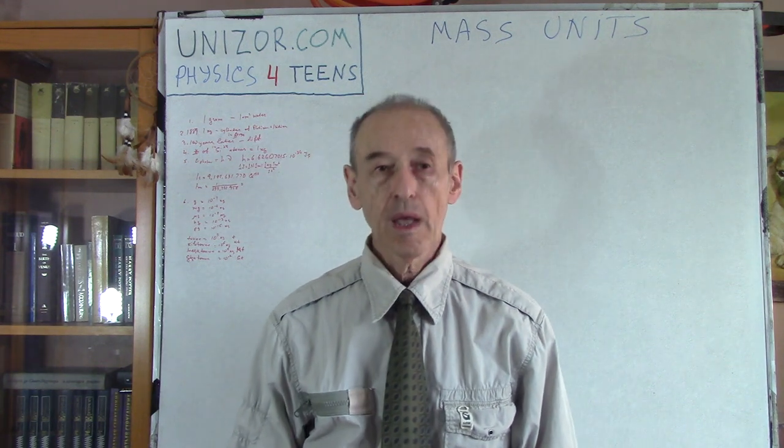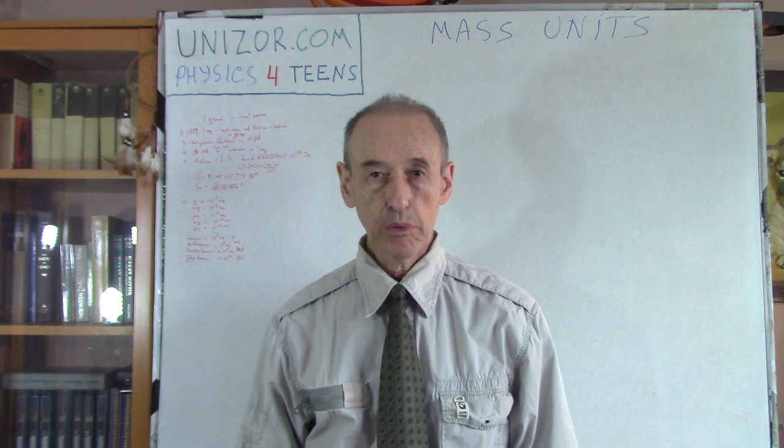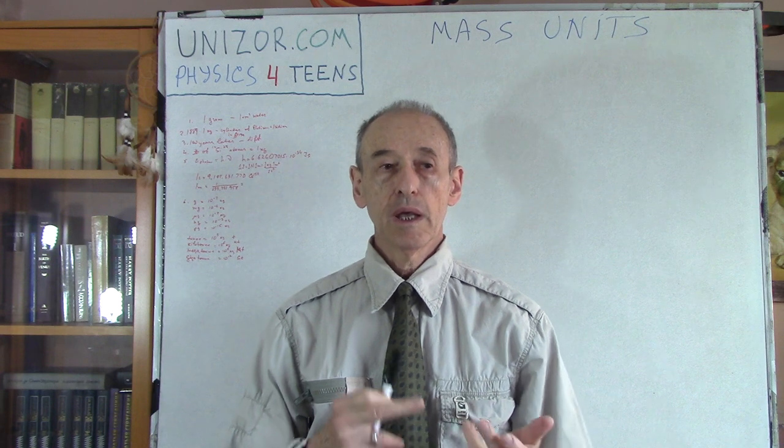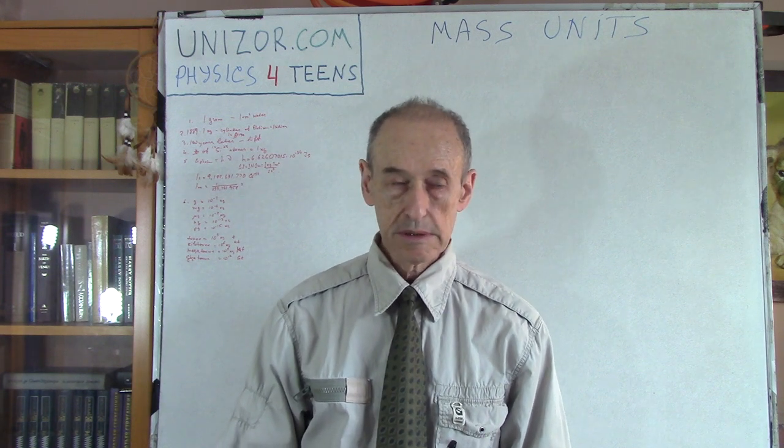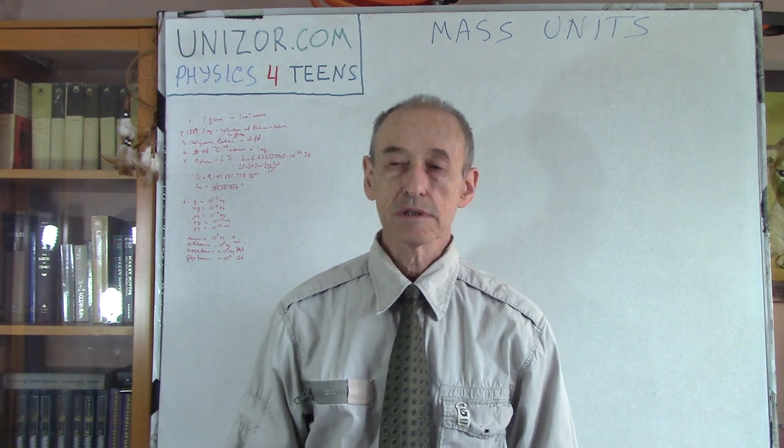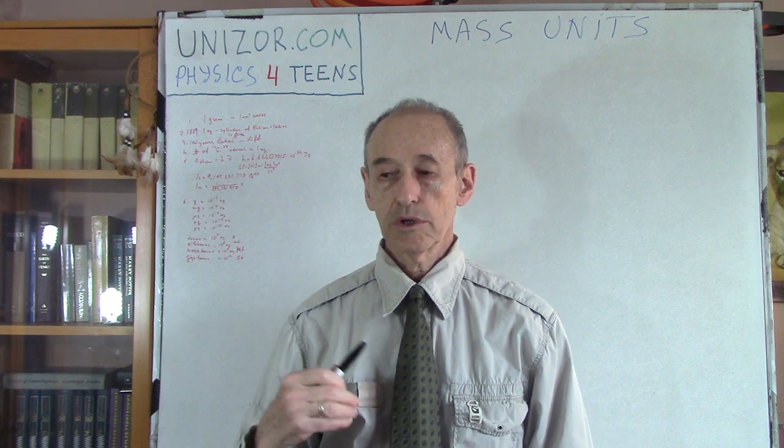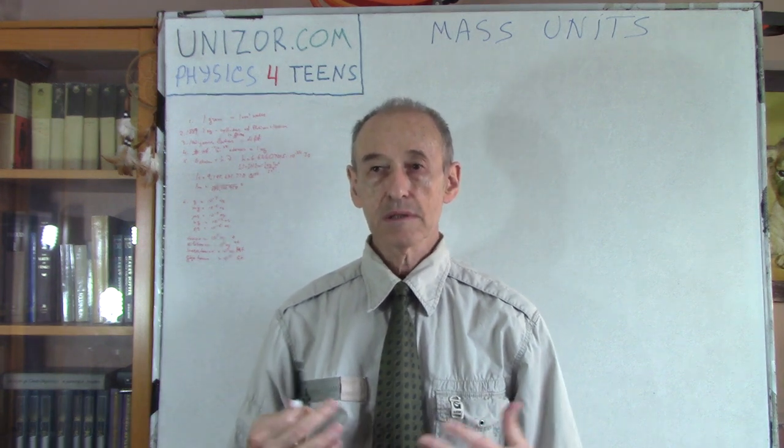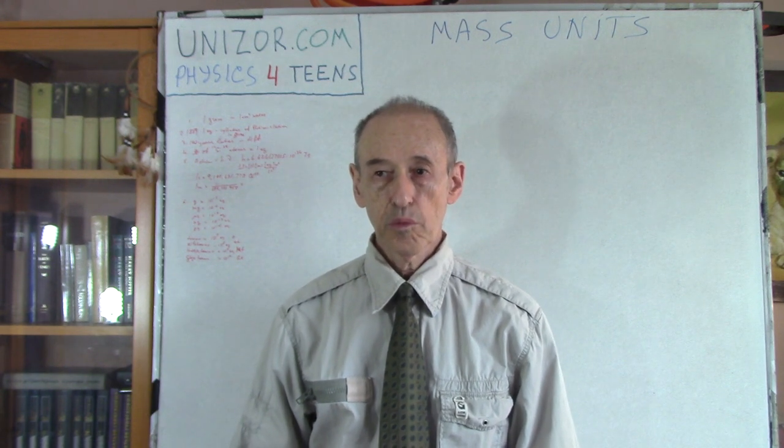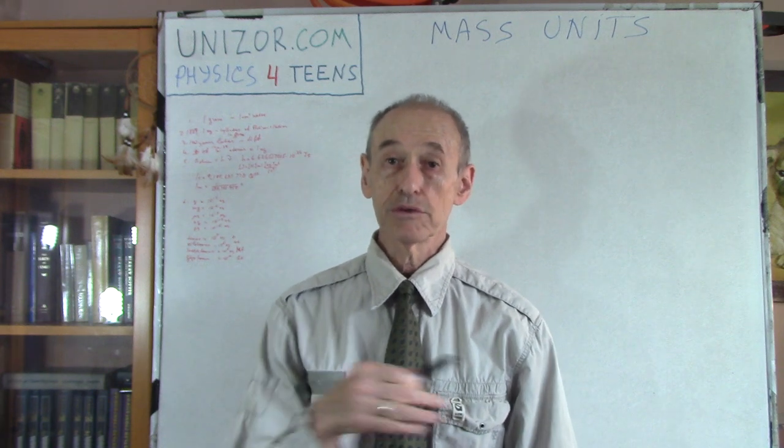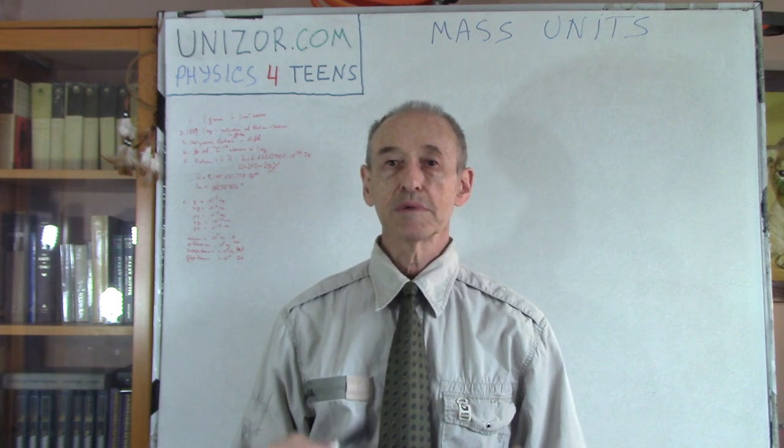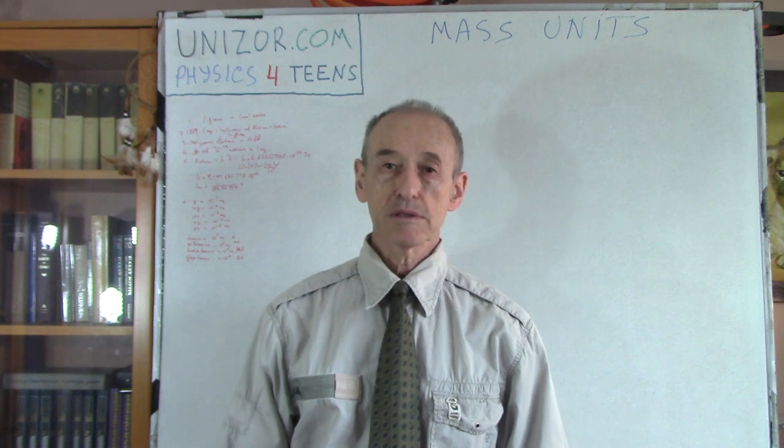We have already spoken about seconds as the unit of time and meters as the unit of lengths. Now, it's been a decision, actually, of physicists to use units of measurements based on certain natural physical constants which do not really depend on whatever we are doing. The value does not depend. So it's not supposed to be something artificial, it's supposed to be based on something objective.